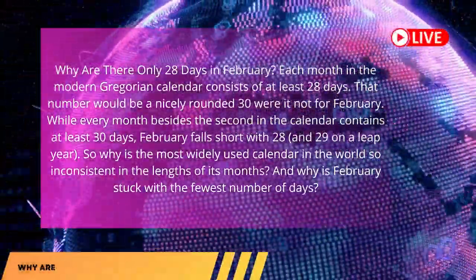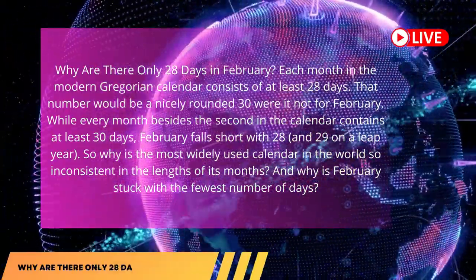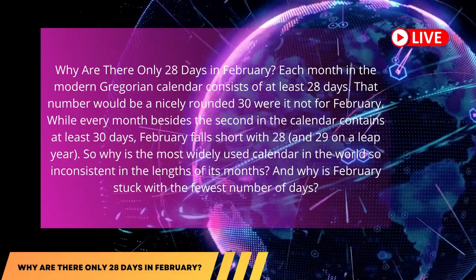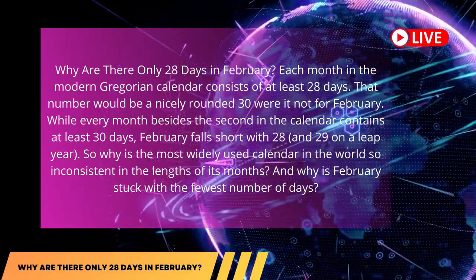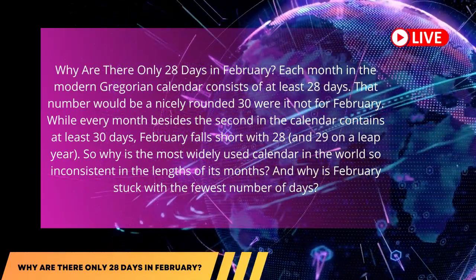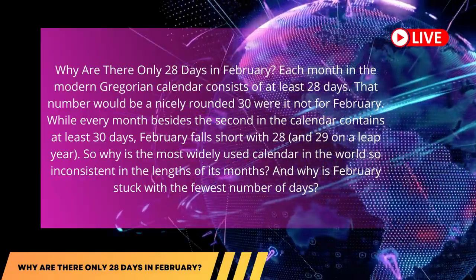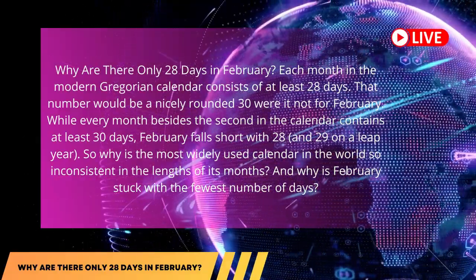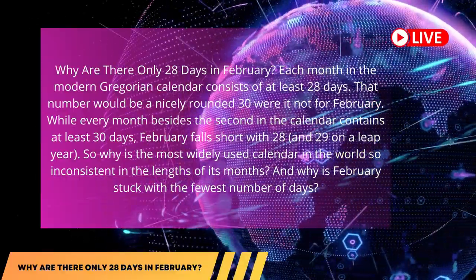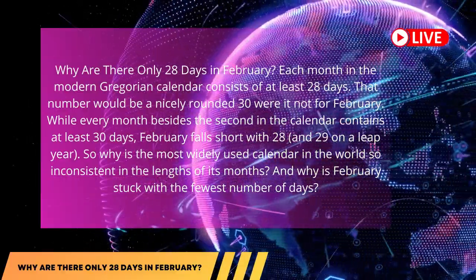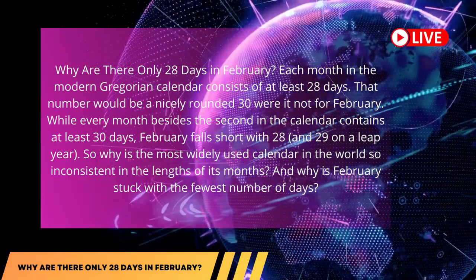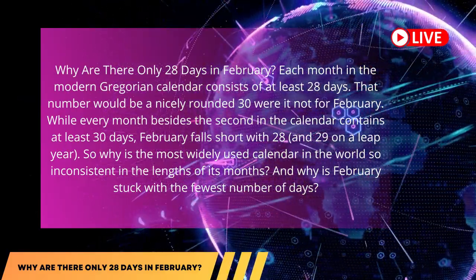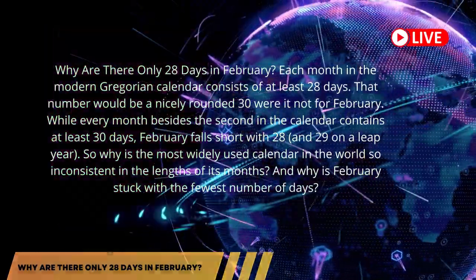Why are there only 28 days in February? Each month in the modern Gregorian calendar consists of at least 28 days. That number would be a nicely rounded 30 were it not for February. While every month besides the second in the calendar contains at least 30 days, February falls short with 28, and 29 on a leap year. So why is the most widely used calendar in the world so inconsistent in the lengths of its months?